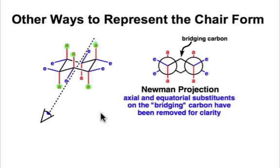They are vertical, up or down, relative to some average plane that would slice through that cyclohexane chair.